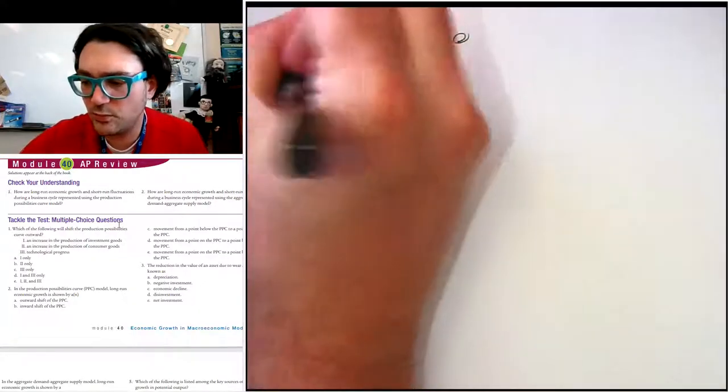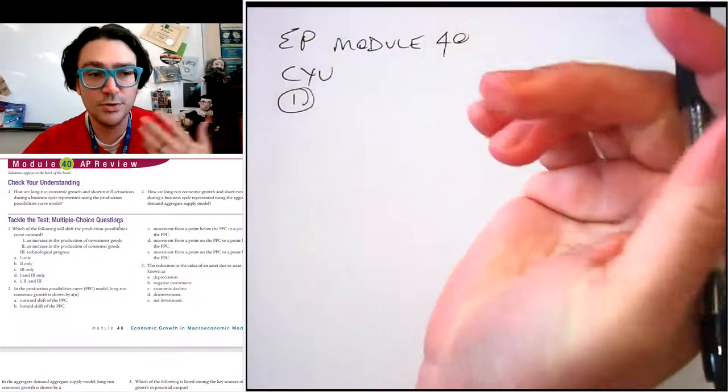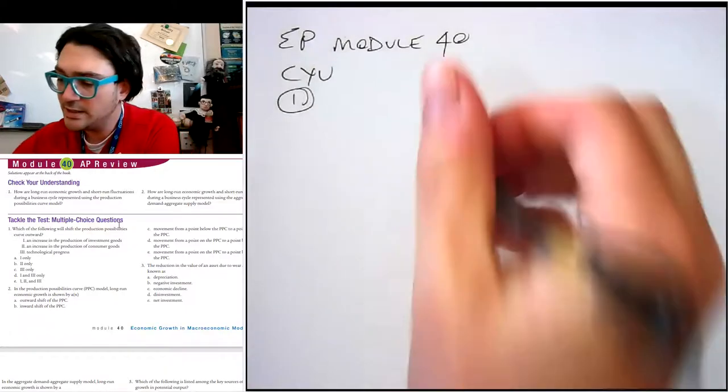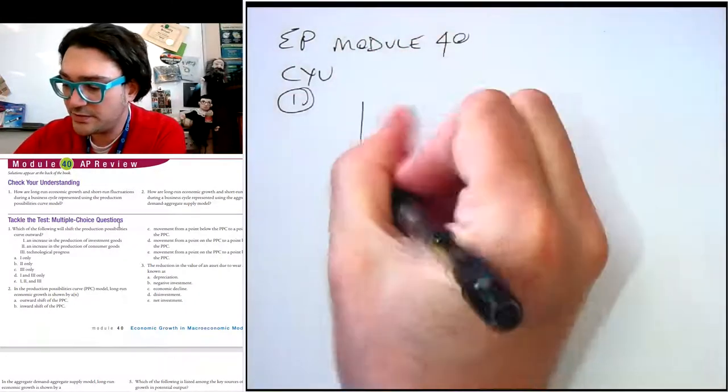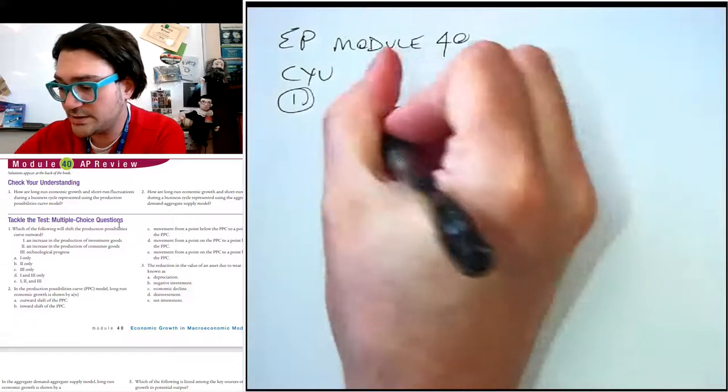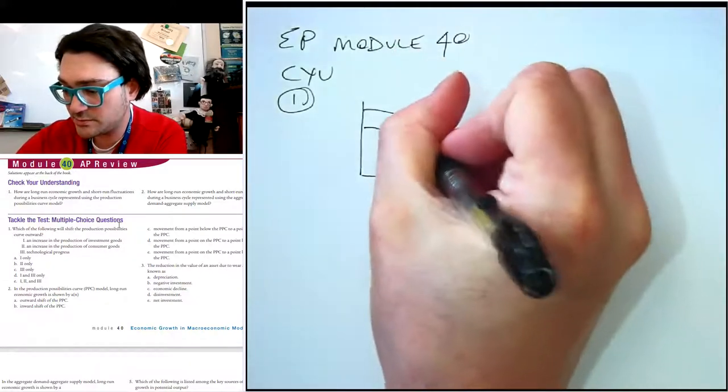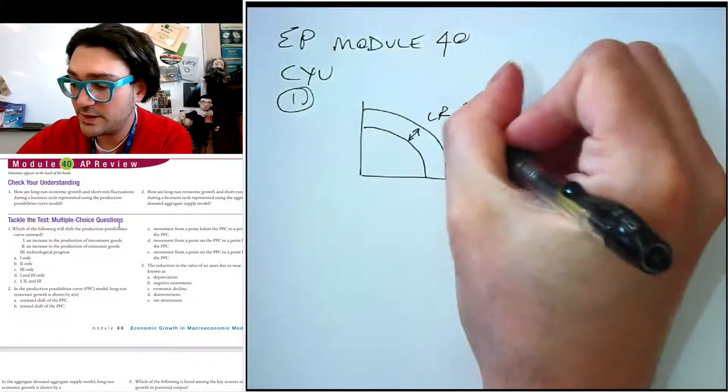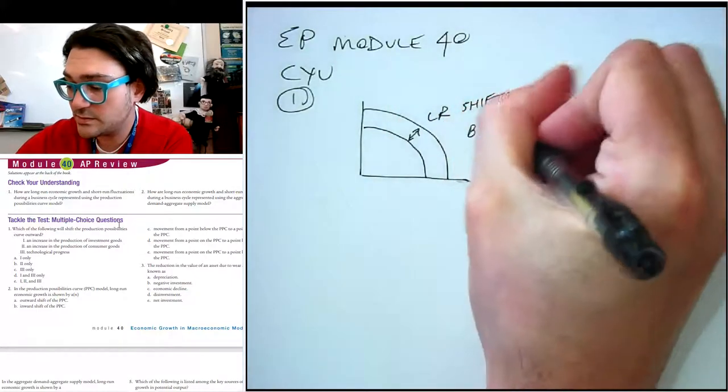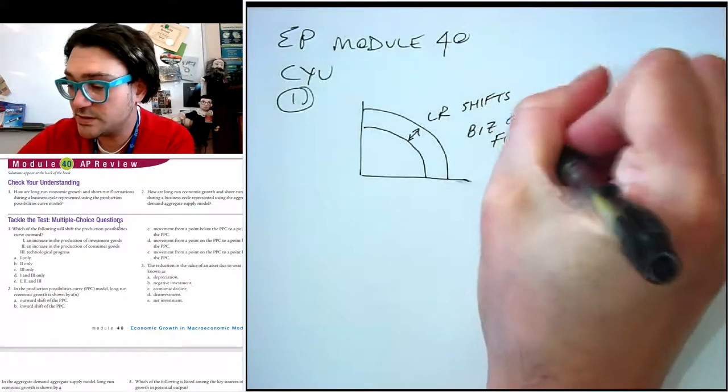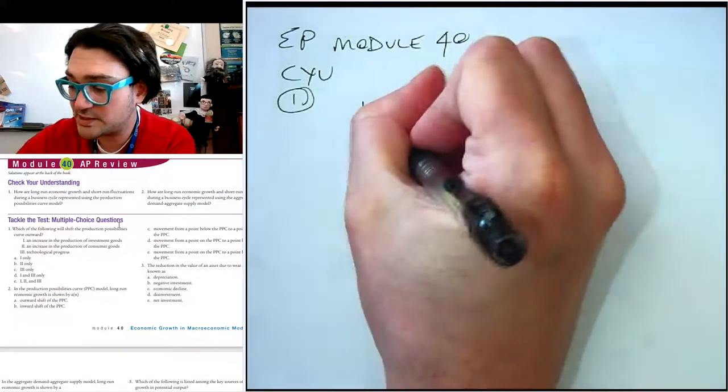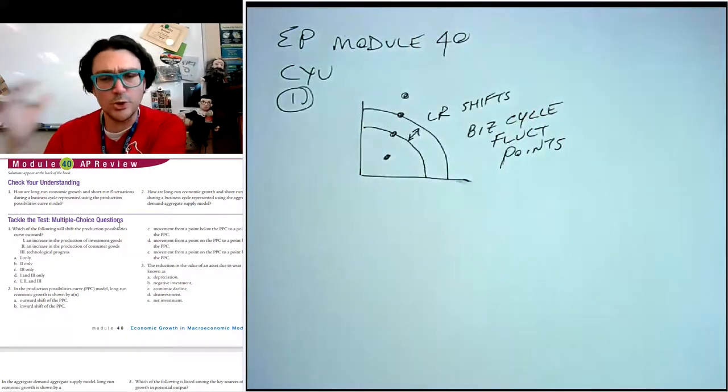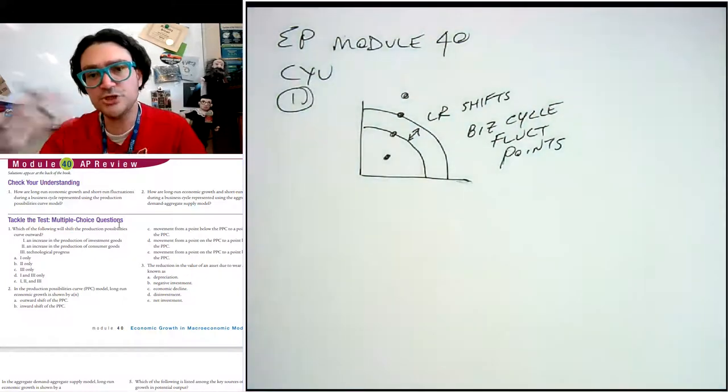Check your understanding number one says, how are long run economic growth and short run fluctuations during a business cycle represented using the PPC. And so, the long run is shifts, right? Long run is shifts and the business cycle fluctuations are points. So the long run growth would be shifting the curve, right?